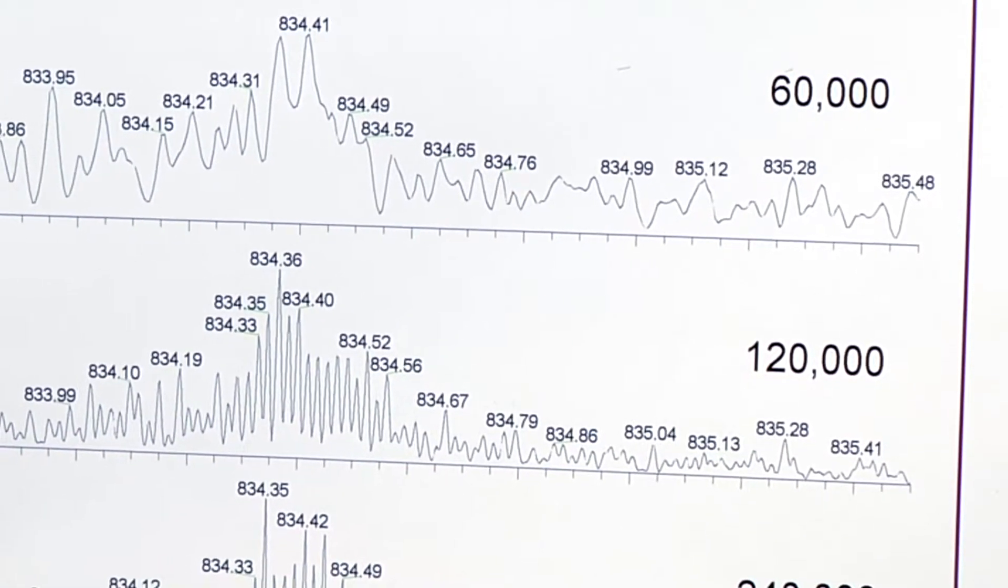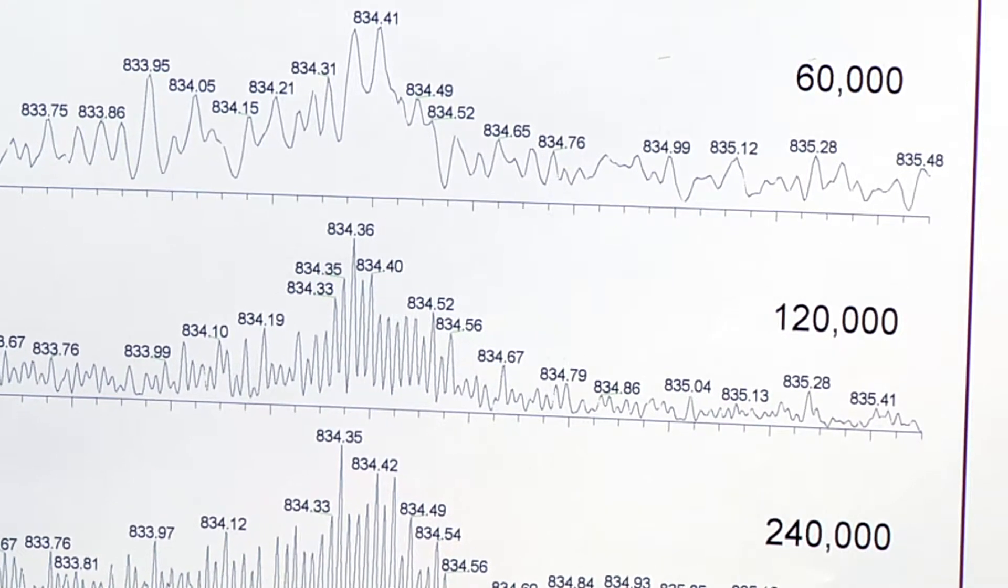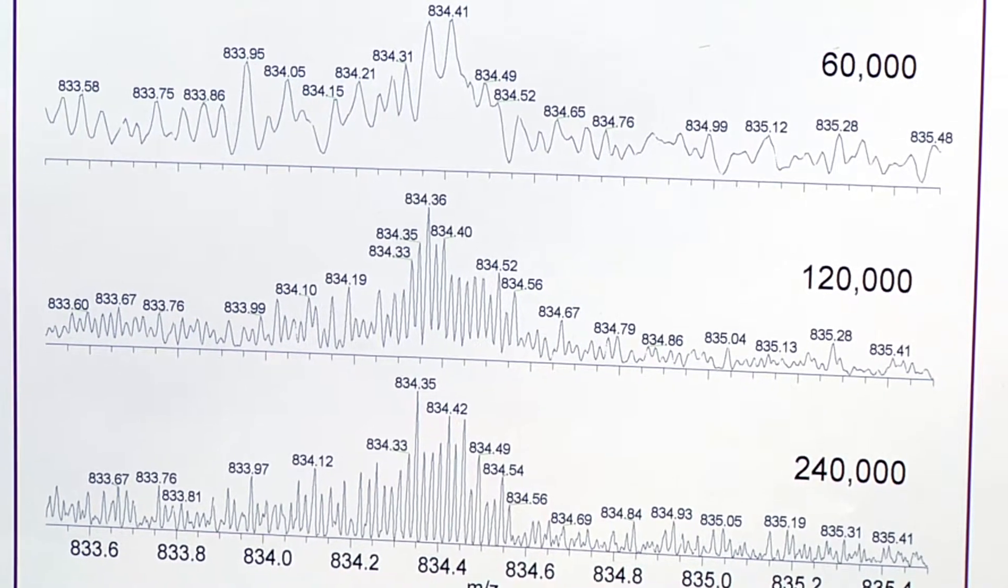And that's shown right here. So 60,000, you can't really resolve the isotopes for enolase at all. 120,000, it's a little bit resolved, but 240,000, we're getting baseline resolution for those isotopes.